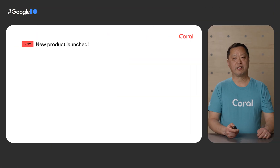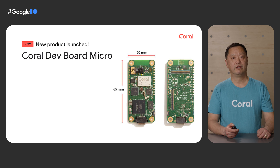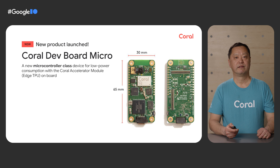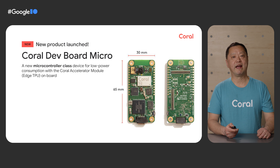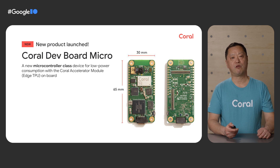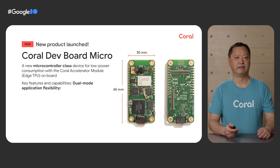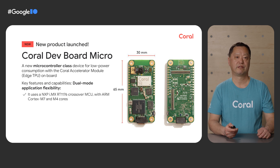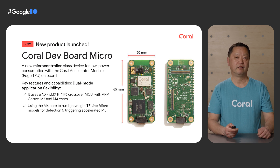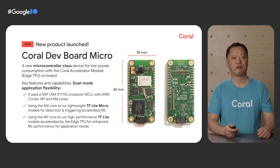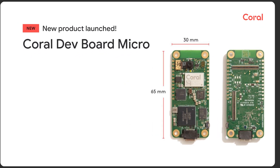Now let me provide an introduction to this new Dev Board Micro from Coral. We have just launched this new exciting product. First, this is a new microcontroller class device for edge AI solutions. Like many microcontrollers on the market, it is tiny and consumes very little power. But unlike any other microcontroller, it has the Coral accelerator module on the board, which means it has onboard machine learning acceleration capability. Second, it has a unique dual mode operation capability with the NXP RT1176 microcontroller with two cores. It can operate in two different power modes: using the M4 core for the TensorFlow Micro model in low power consumption mode, and using the M7 core to run the TensorFlow Lite model in a high performance mode.